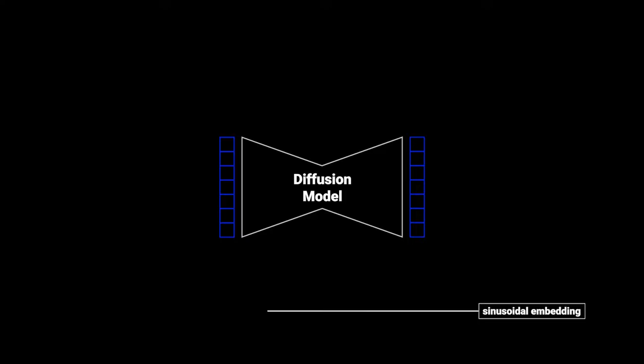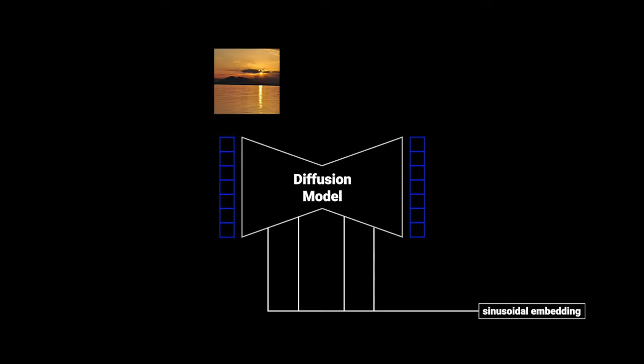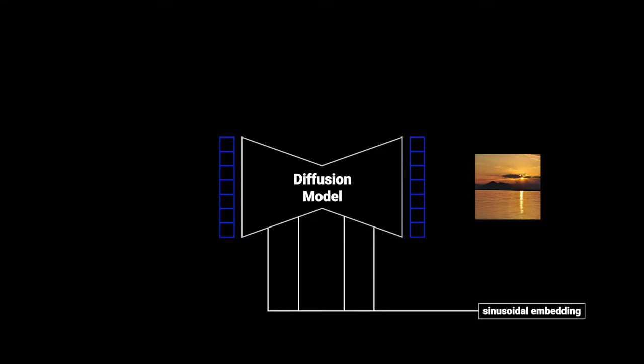This time embedding is projected into each residual block. This is important because the forward diffusion process uses a schedule which scales the mean and the variance, meaning different amounts of noise are applied at different time steps. With this information, the model can take care of removing different amounts of noise at different time steps, which greatly benefits the outcome.